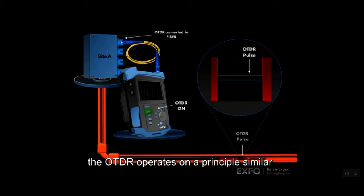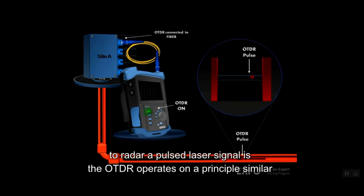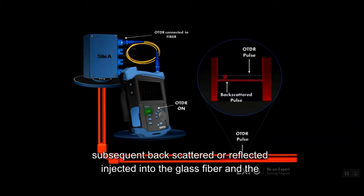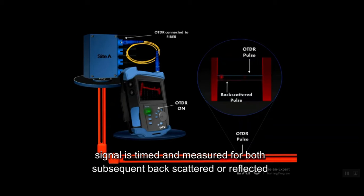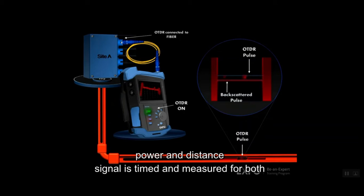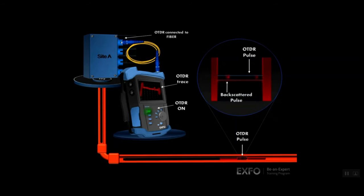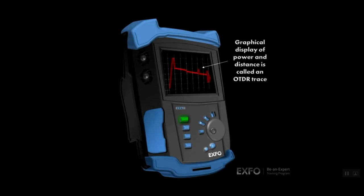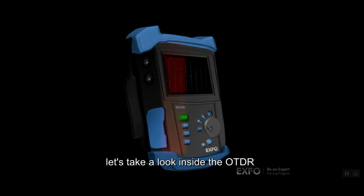The OTDR operates on a principle similar to radar. A pulsed laser signal is injected into the glass fiber and the subsequent backscattered or reflected signal is timed and measured for both power and distance. Let's take a look inside the OTDR.